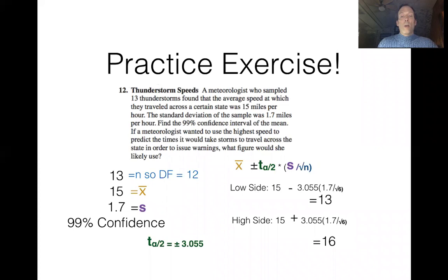We also worked on question number 12 in section 7-2, and when we worked through this question, the standard deviation was given to us from a sample, and that was how we knew right away to do the t-distribution. And we had found out that our interval estimate was going to be 99% confidence that the speed thunderstorms moved through this area was between 13 and 16 miles an hour.